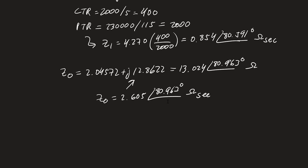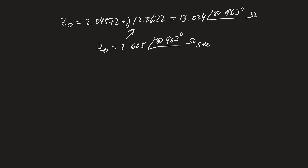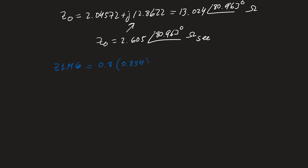Now let's calculate the reaches of the mho ground distance element. We use the positive sequence impedance — which is counterintuitive for a ground element, but we compensate using the zero sequence compensation factor. For zone one, Z1MG = 0.8 × 0.854 = 0.68 ohms secondary, rounding to two decimal places as the relay requires.